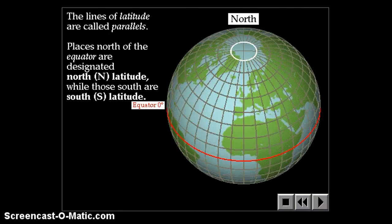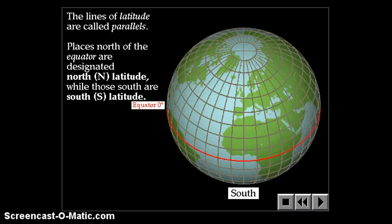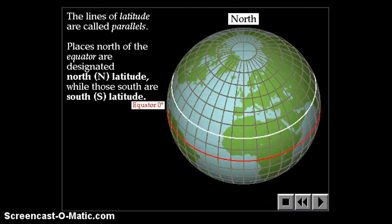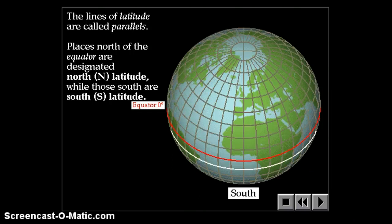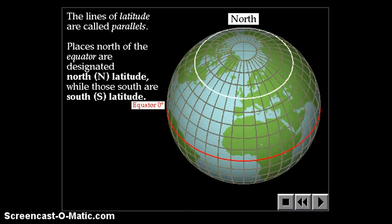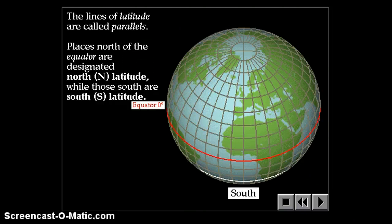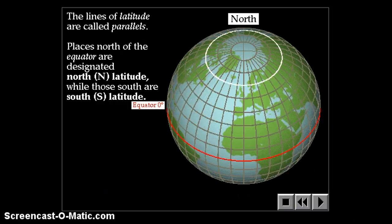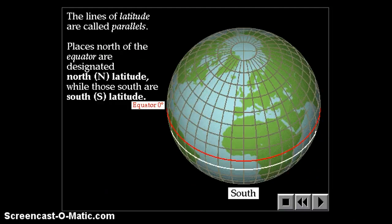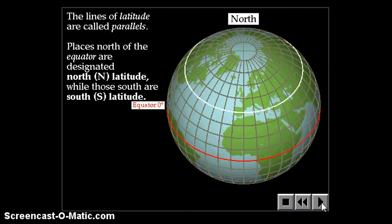The lines of latitude are also called parallels because they're parallel — they never cross each other. Places north of the equator are designated with an N for north latitude, and those south of the equator are designated with an S for south latitude.